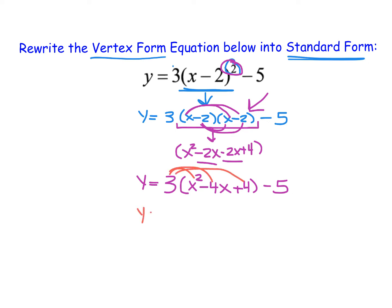So I now have y equals 3x squared minus 12x plus 12 and then that minus 5 off to the side.